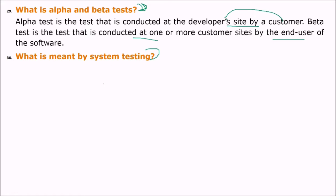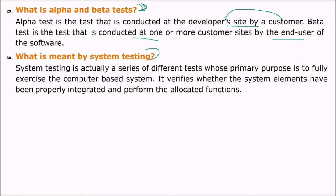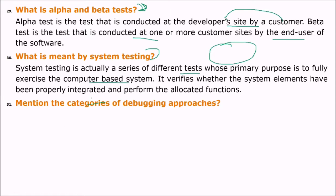What is system testing? System testing is a series of different tests whose primary purpose is to fully exercise the entire computer-based system. It verifies whether the system elements have been properly integrated and perform the allocated functions.